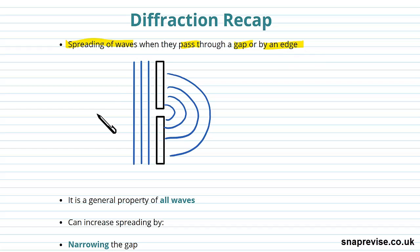We have our incoming wavefronts here, these are our incoming wavefronts, and those are encountering a narrow gap. That's just here. We see this diffraction or spreading here.